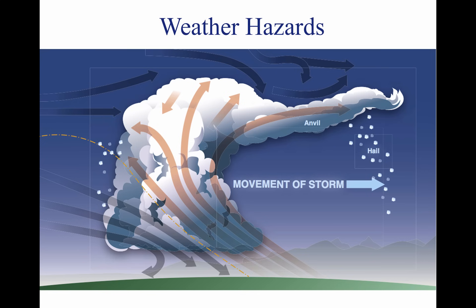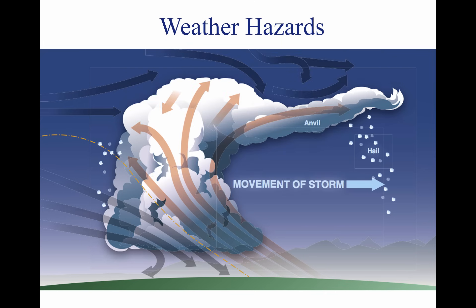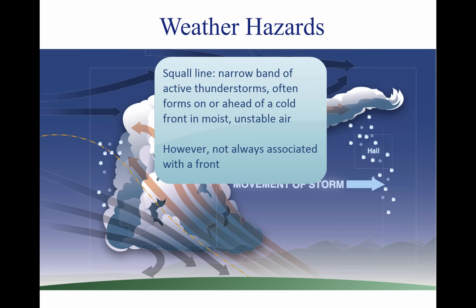Weather can pose serious hazards to flight, and a thunderstorm packs just about every weather hazard known to aviation into one vicious bundle. These hazards occur individually or in combinations, and most can be found in a squall line. For a thunderstorm to form, the air must have sufficient water vapor, an unstable lapse rate, and an initial lifting action to start the storm process. Fronts, converging winds, and troughs aloft force upward motion spawning these storms, which often form into squall lines.